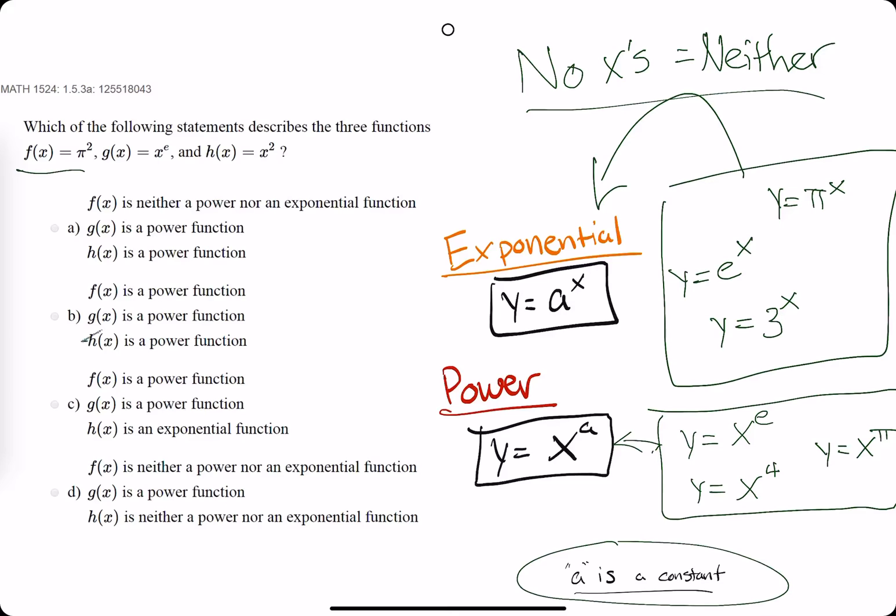So we can get rid of options b, c, which both say there that f is a power function.